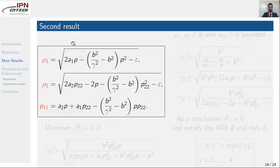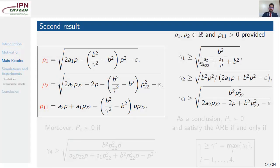The second result is clear now. We have rho1, rho2, and p11. Rho2 and rho1 are free of values if gamma satisfies that it's greater than these two values here. And p11 is positive if gamma is also greater than this value.